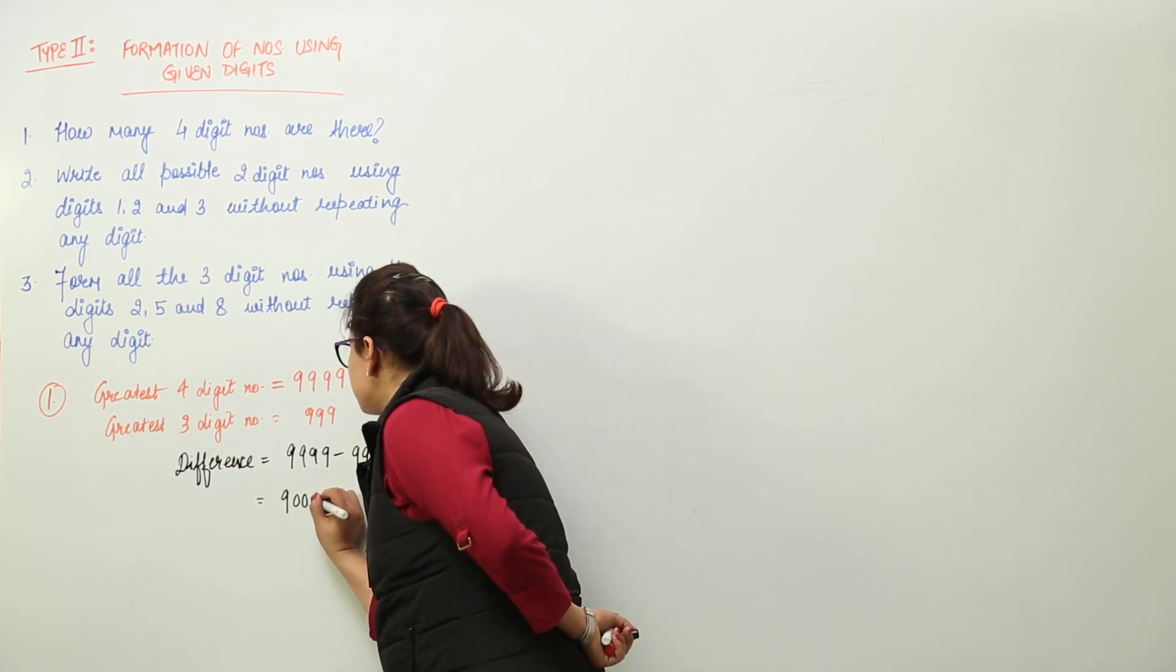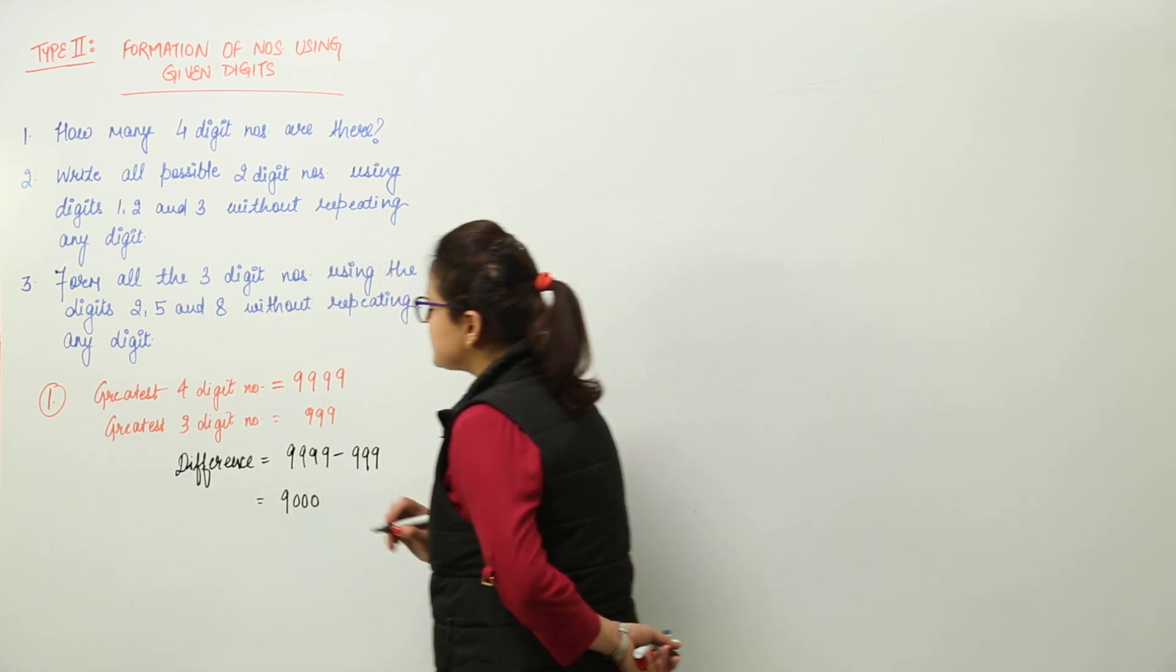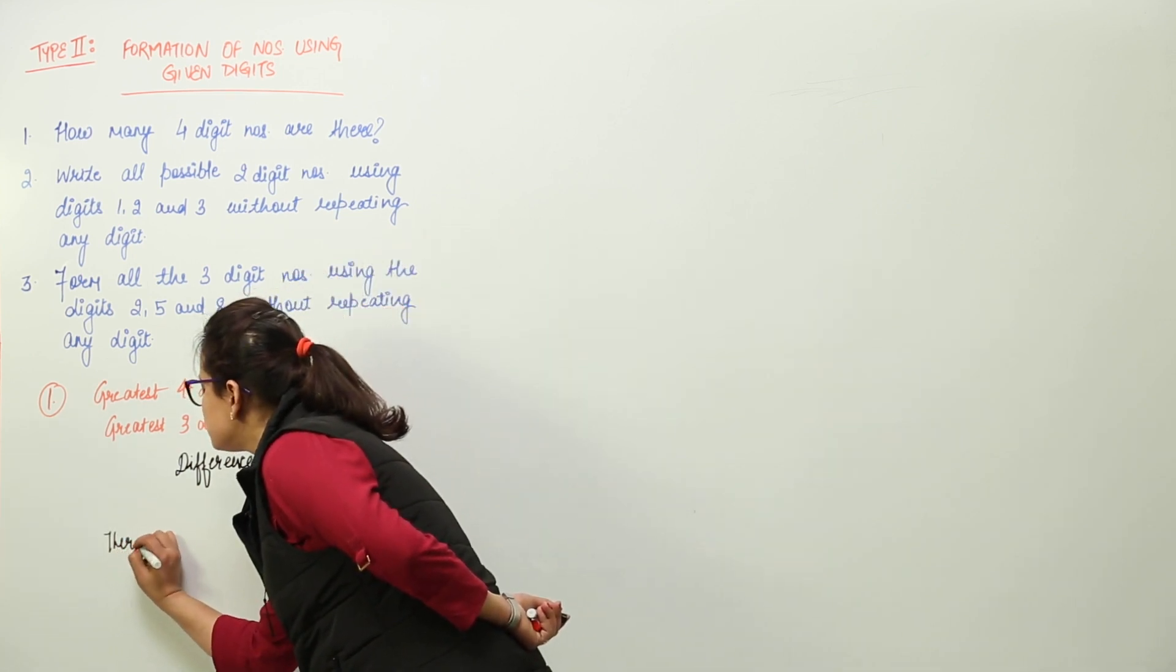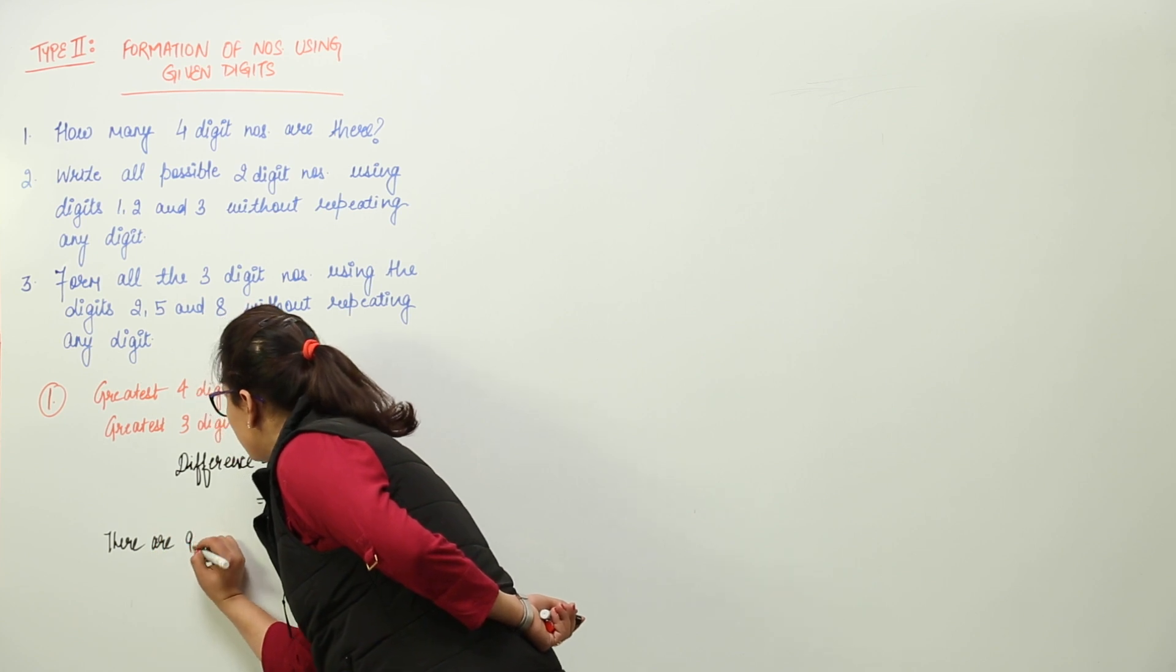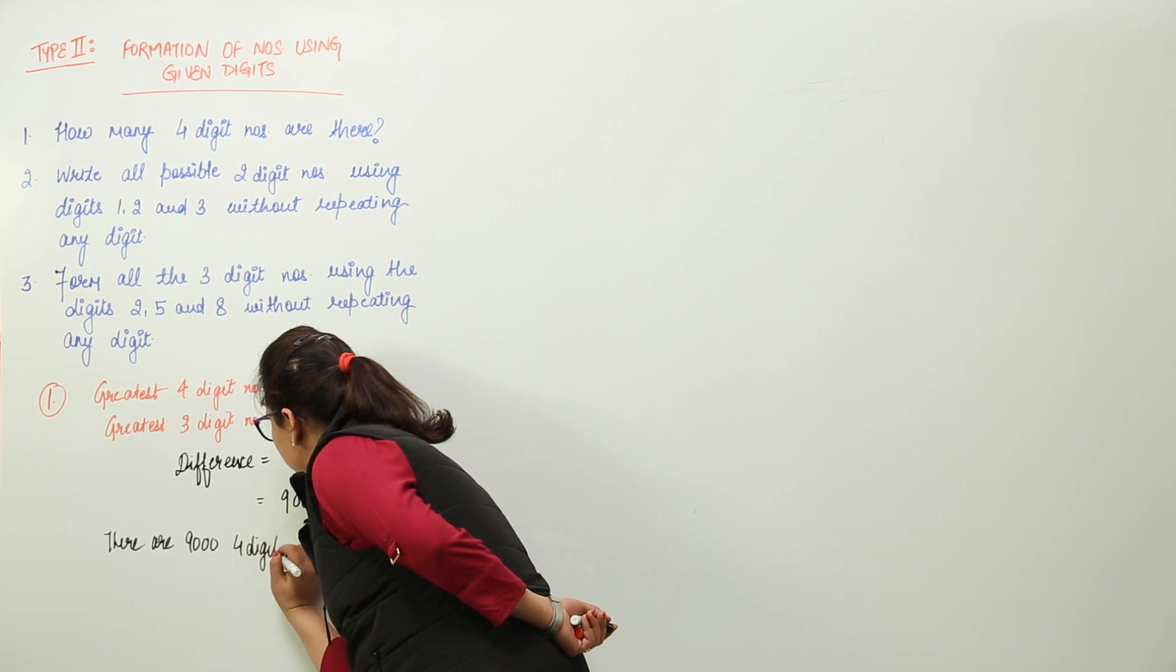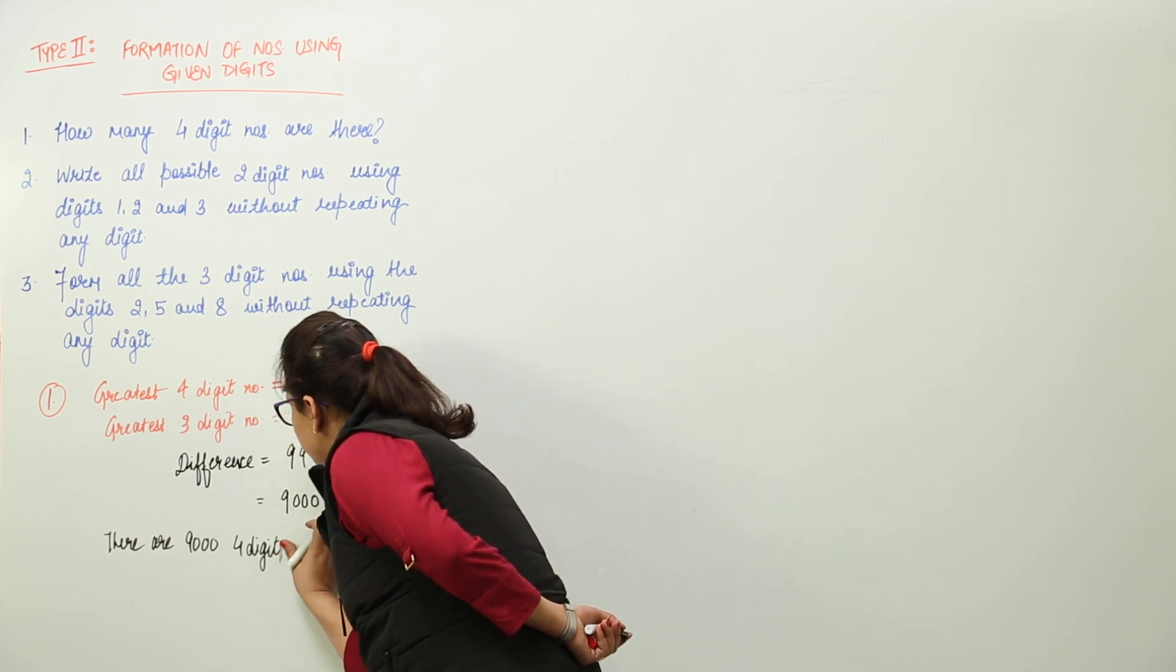When you do so, you get 9000. So the difference is 9000, which means there are 9000 four-digit numbers possible.